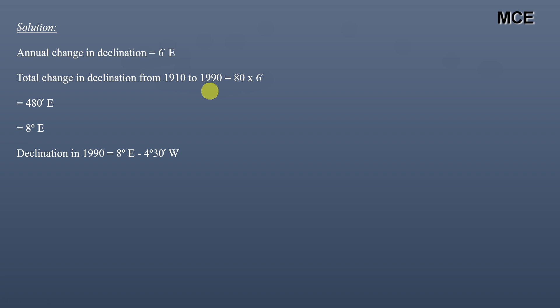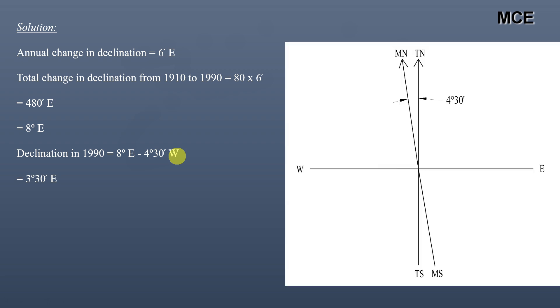Since the declination in 1910 was 4°30' westward, the declination in 1990 will be 8° eastward minus 4°30' westward, which gives 3°30' eastward. So the declination in 1990 is 3°30' eastward.